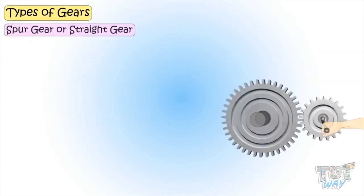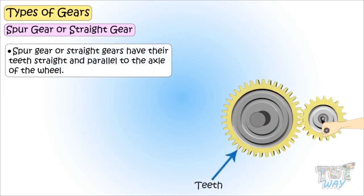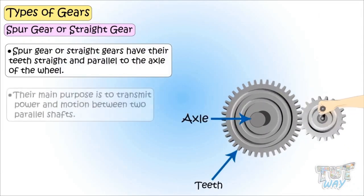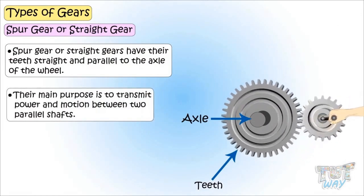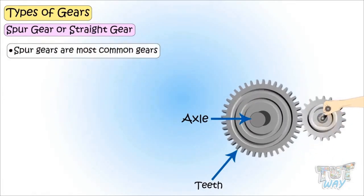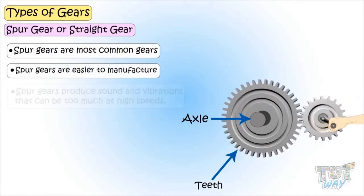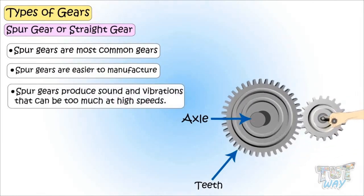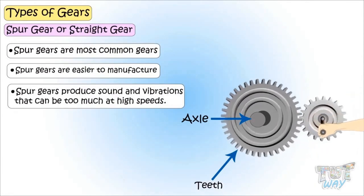The first type is the spur gear, or straight gear. Spur gears have their teeth straight and parallel to the axle of the wheel. Their main purpose is to transmit power and motion between two parallel shafts. Spur gears are the most common gears and are easier to manufacture, but they produce sound and vibrations — too much noise — especially at high speeds.